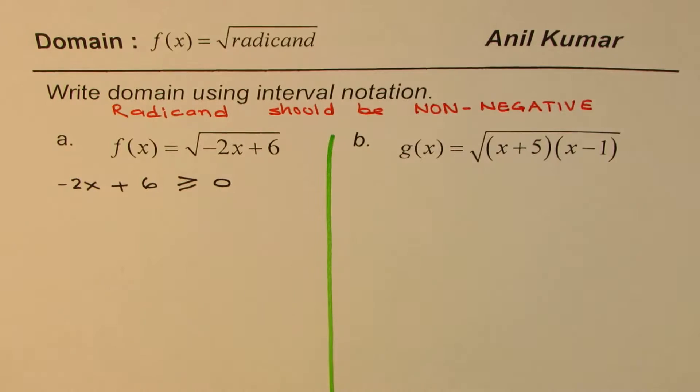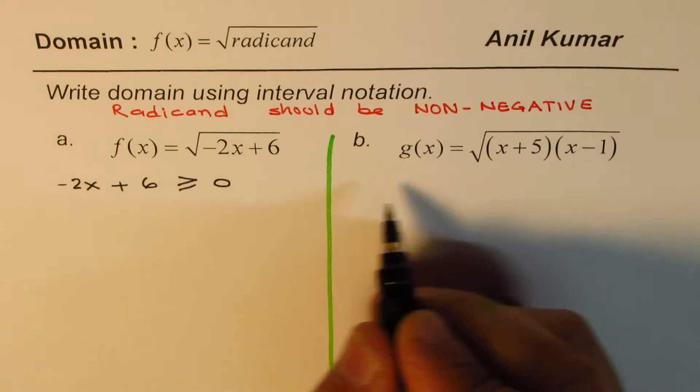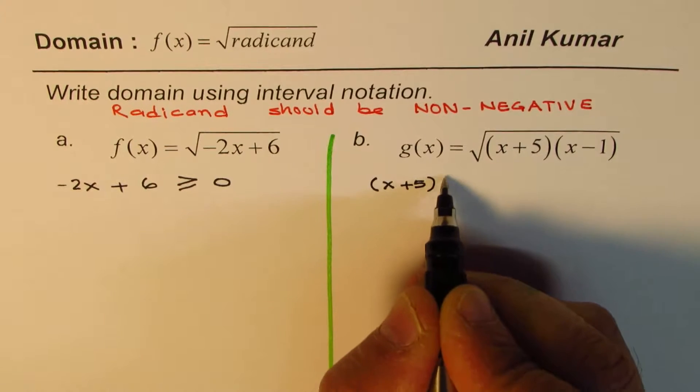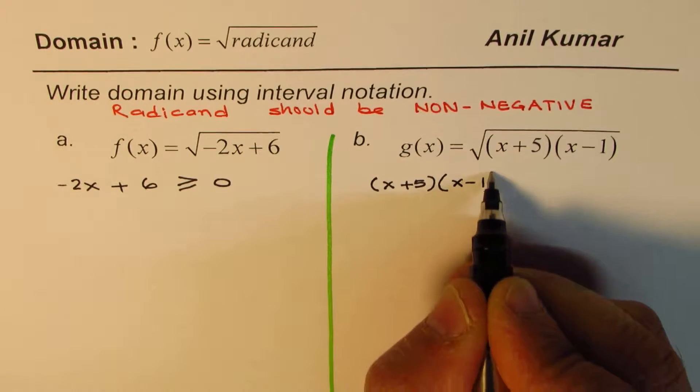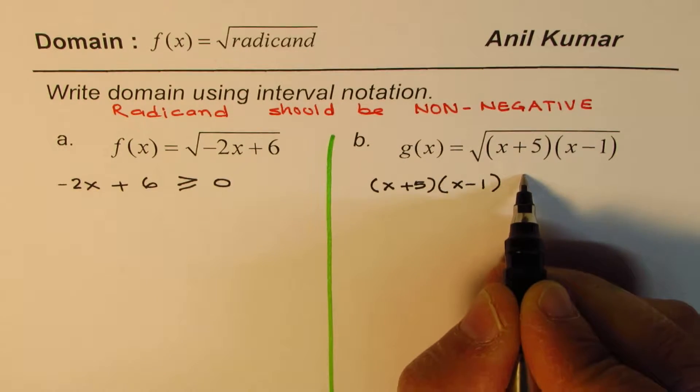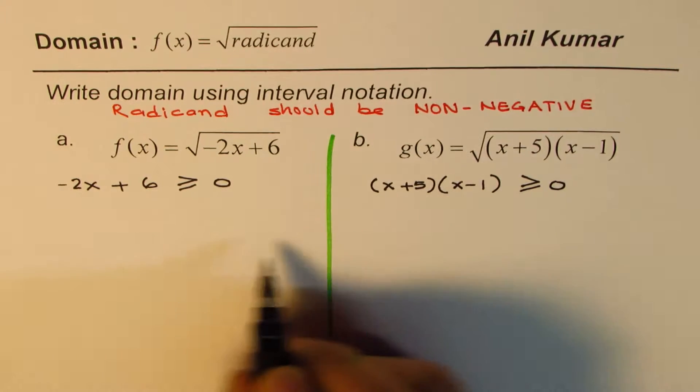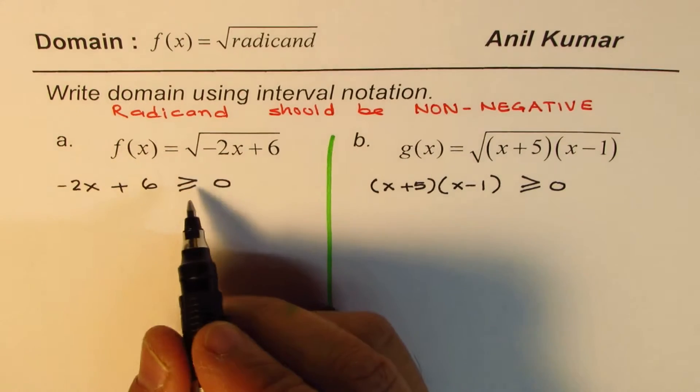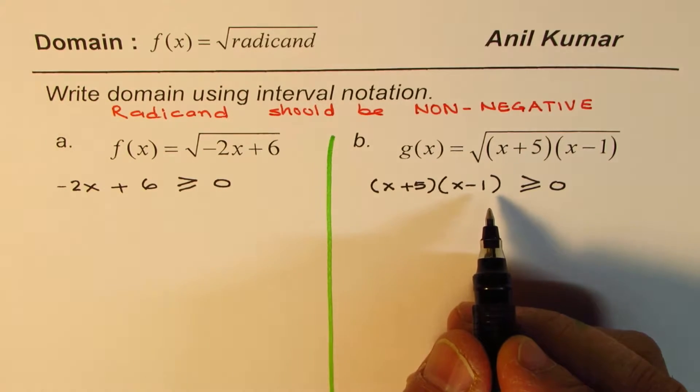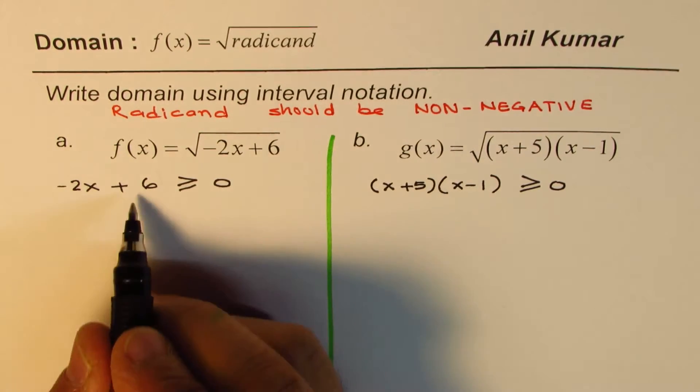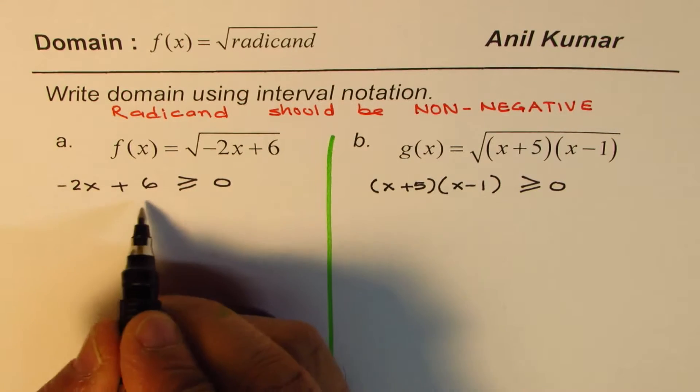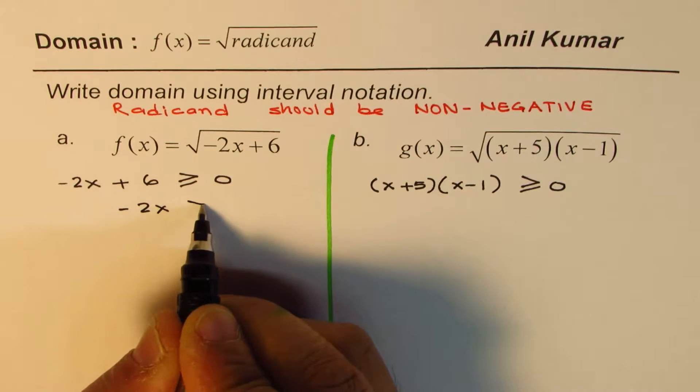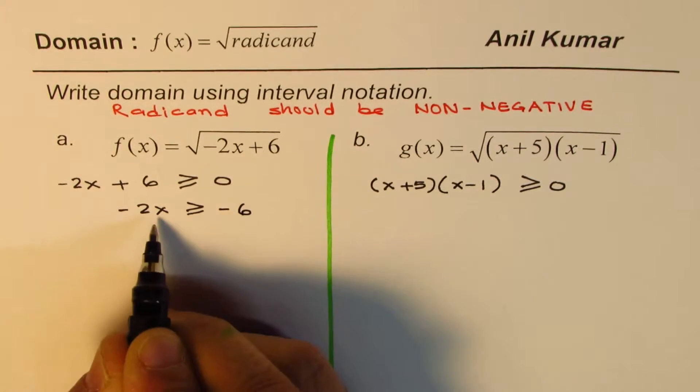In the other function g(x) we have these two factors x + 5 times x - 1. Their product should be greater than or equal to 0, so this is the inequality which when solved will tell you the domain of this function. Let's solve this inequality.